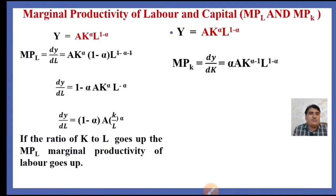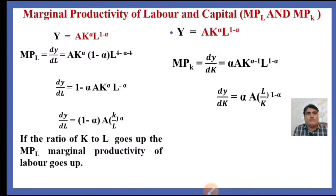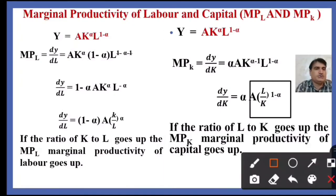We do partial derivation to find the marginal productivity of capital, dy/dK. Applying the power rule, we get: alpha * A * K^(alpha-1) * L^(1-alpha), which simplifies to alpha * A * (L/K)^(1-alpha). This ratio tells us that if the labor-to-capital ratio goes up, the marginal productivity of capital goes up. This means capital and labor inputs are complements.